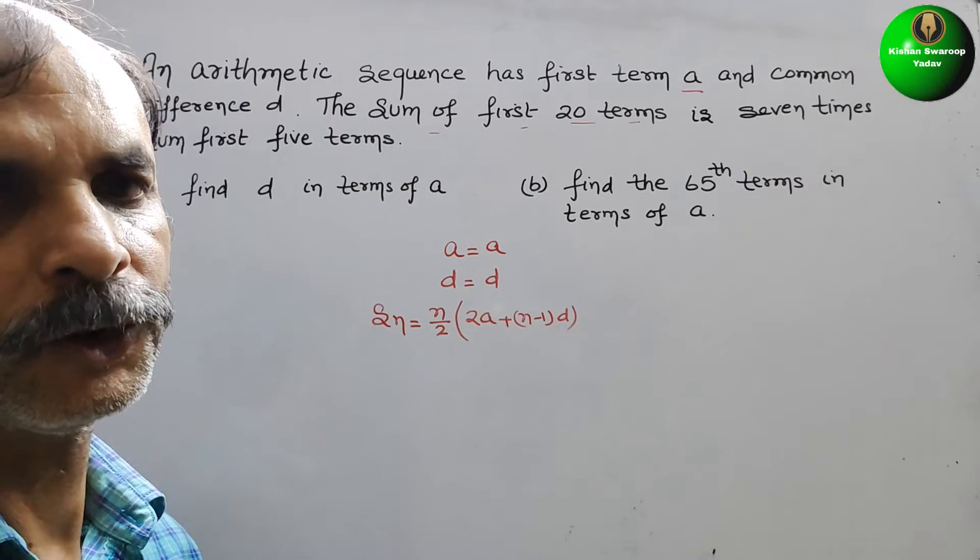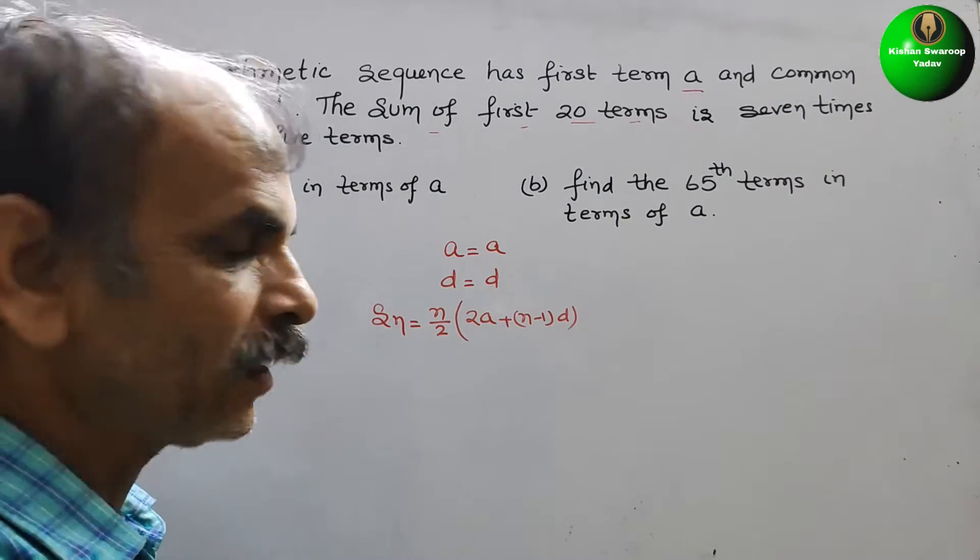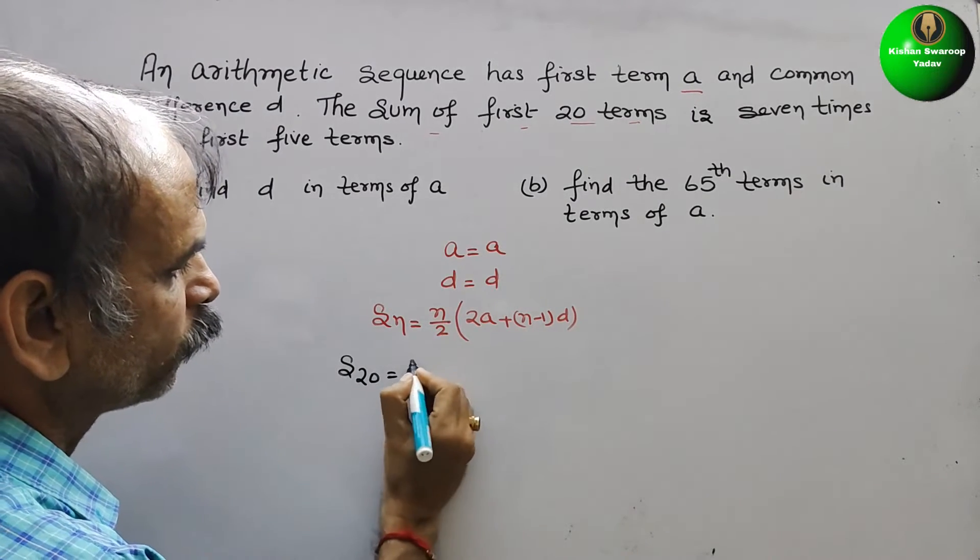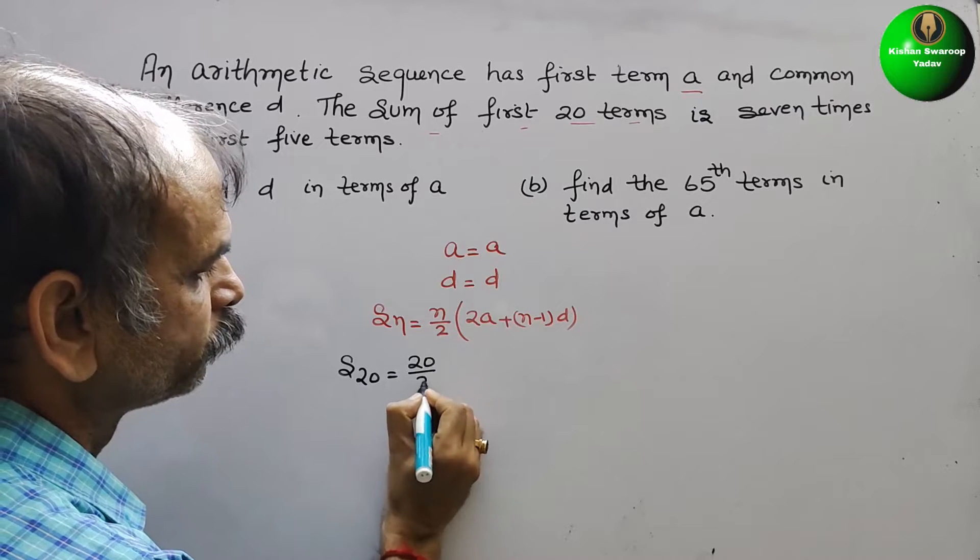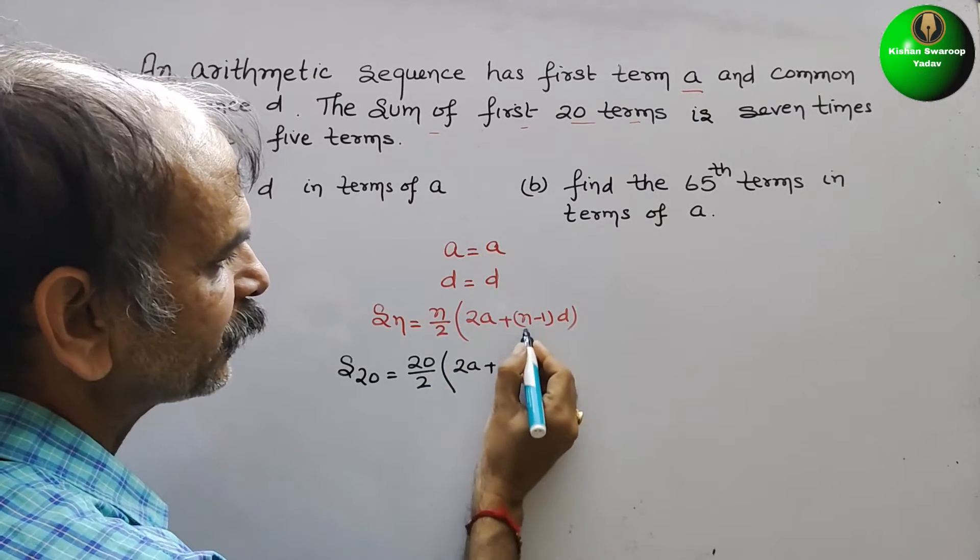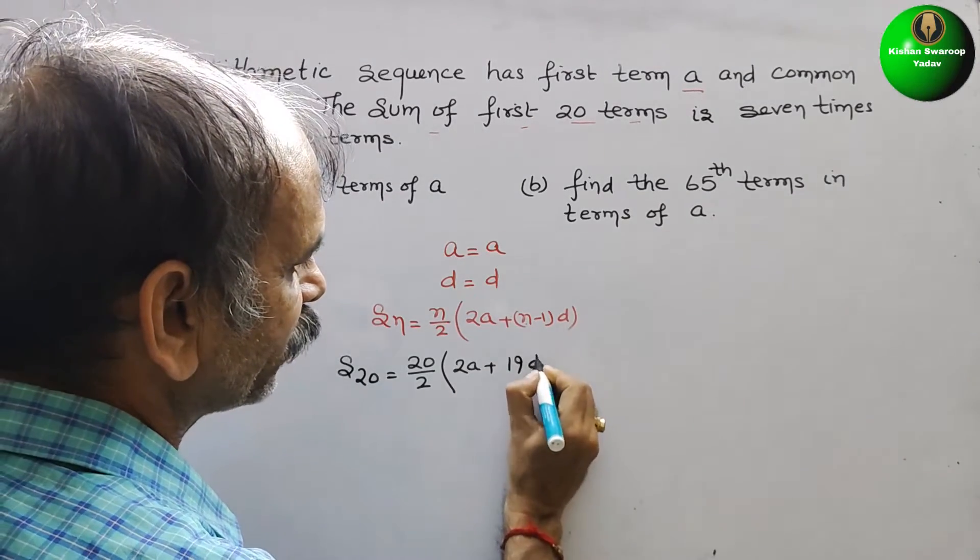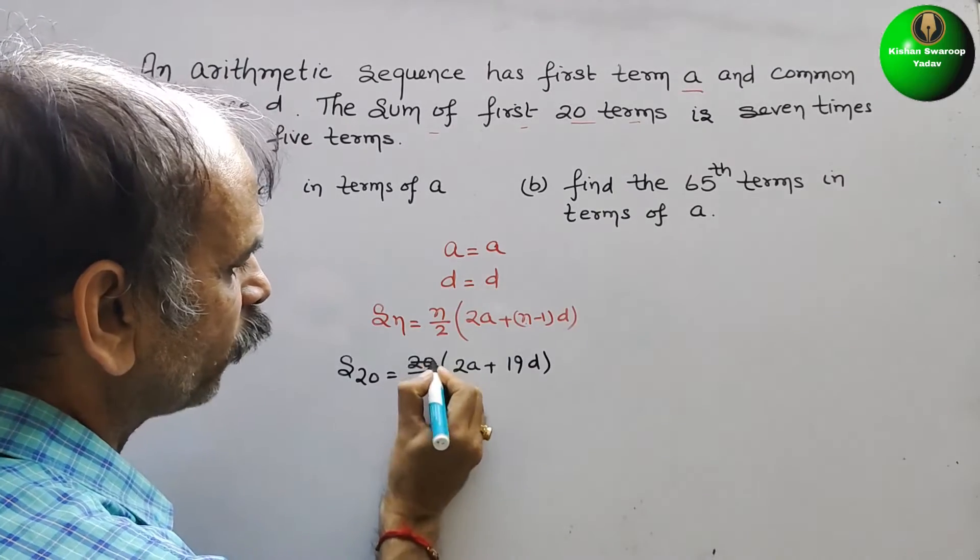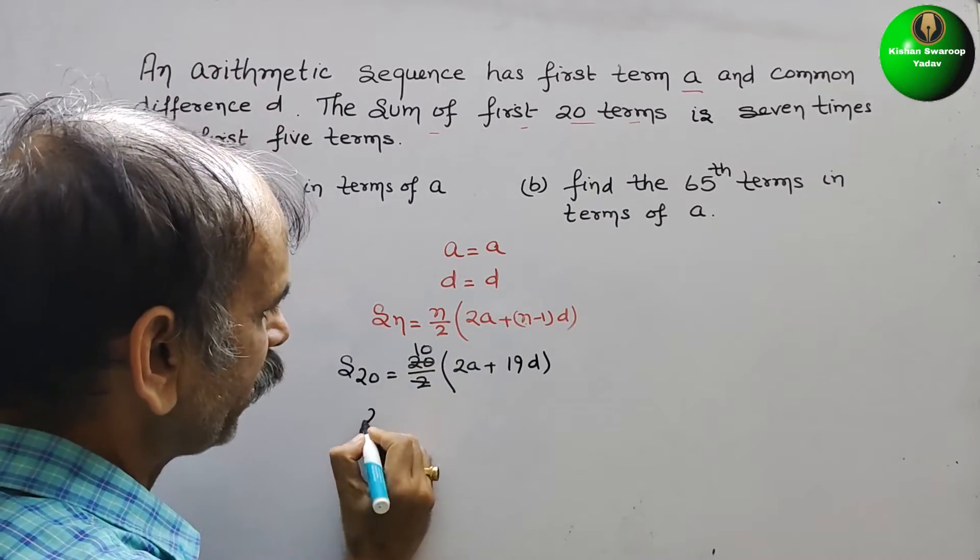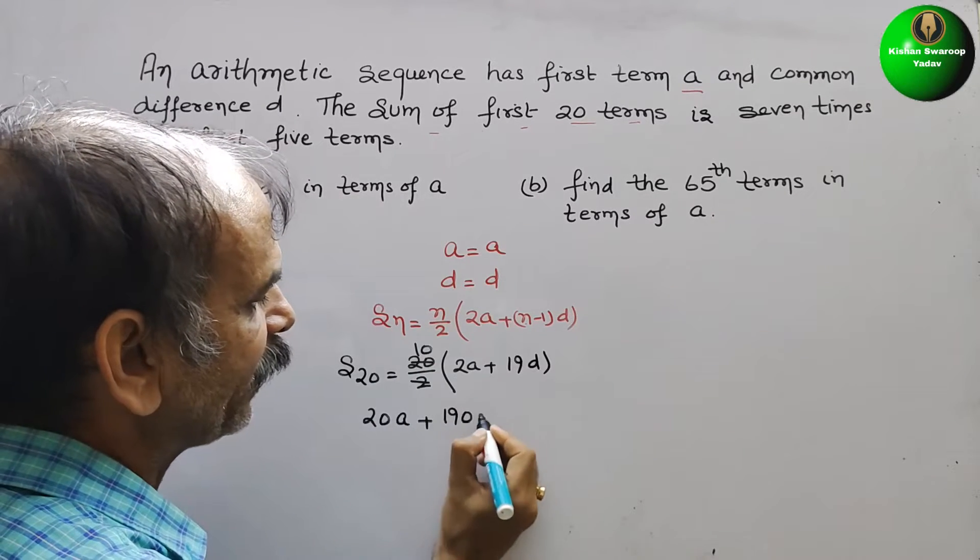Now substitute the values. So if you substitute the value, S_20 equals 20 by 2, and here comes 2A plus 20 minus 1 is 19, so here comes 19D. So this will go in 10 times. So now it will be 20A plus 190D.